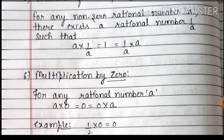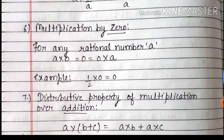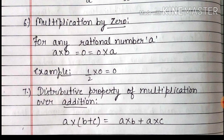Next is multiplication by 0. For any rational number A, A multiply 0 equals to 0 equals to 0 multiply A. Example देखिए: 1 by 2 multiply 0 equals to 0. यानि कि अगर कोई भी rational number को 0 से multiply करेंगे, तो उसका answer 0 ही आएगा.